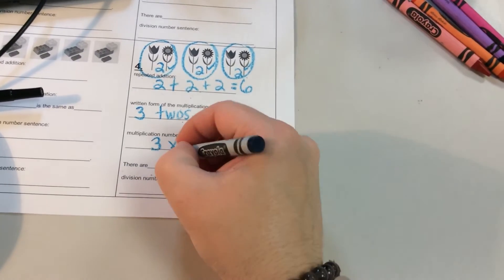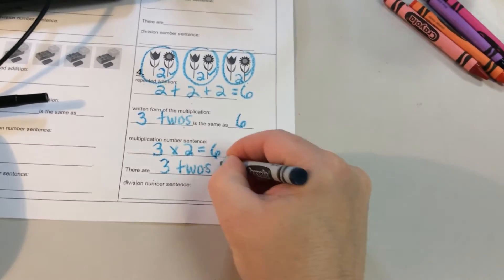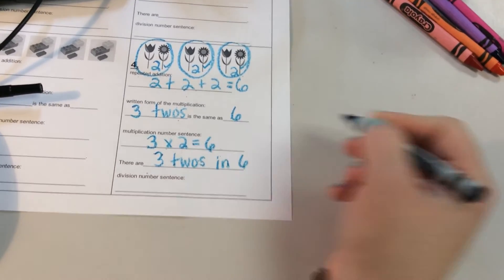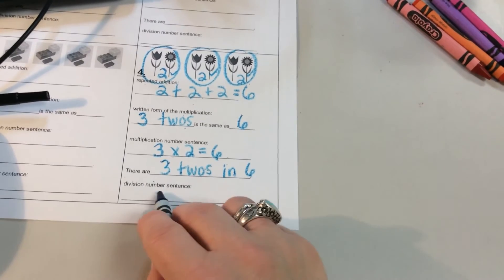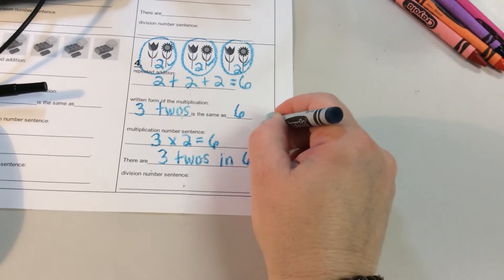So there are three twos in six. It's another way we say it. Our division number sentence. We have, and our number bond is going to help us.